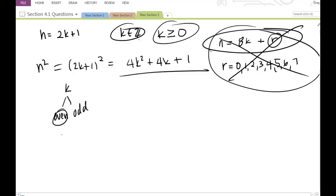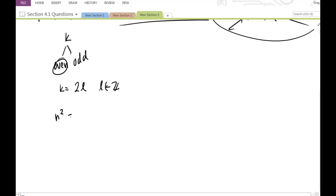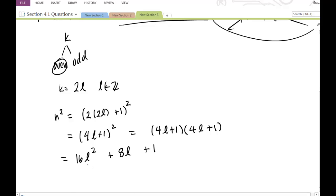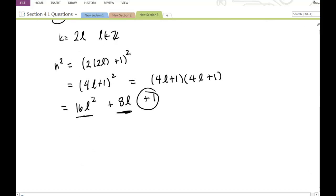Maybe k is even. If k is even, then k is equal to 2 times l for some integer l. Then I'll be able to rewrite n squared as 2 times 2l plus 1 squared. So I would get 4l plus 1 squared. So I'd have 16l squared plus 8l plus 1. You need to know how to multiply out these binomials. And this will work. Because look, 16l squared is congruent to 0 mod 8, 8l is congruent to 0 mod 8, and I get that 1 that I'm looking for. So that's good.